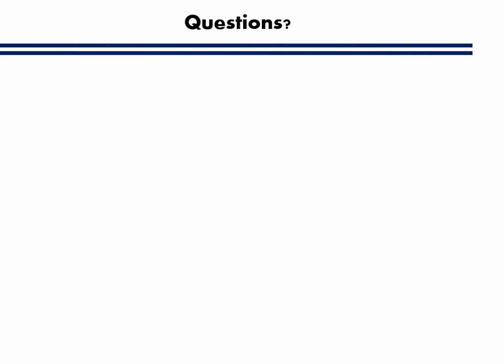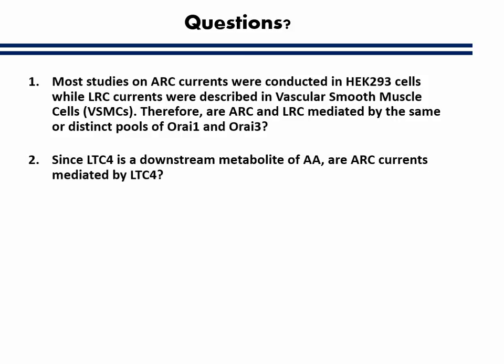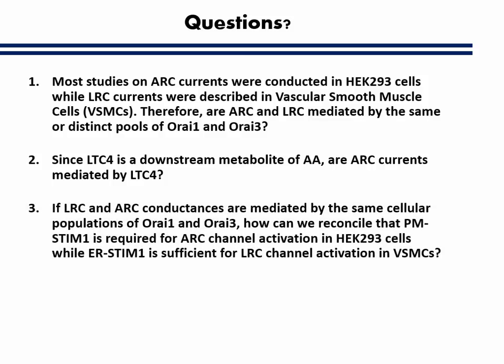Therefore, three questions arise. First, most studies on ARC currents were conducted in HEK cells, while LARC currents were described in smooth muscle cells — so are ARC and LARC mediated by the same or distinct pools of ORI-1 and ORI-3? Second, since LTE-24 is the downstream metabolite of arachidonic acid, are ARC currents mediated by LTE-24? Third, if LARC and ARC conductances are mediated by the same cellular populations of ORI-1 and ORI-3, how can we reconcile that PM STIM-1 is required for ARC channel activation in HEK cells, while ER STIM-1 is sufficient for LARC channel activation in smooth muscle cells?